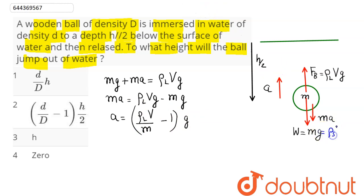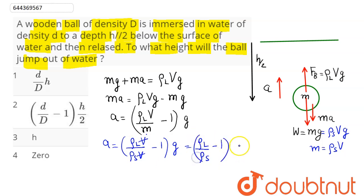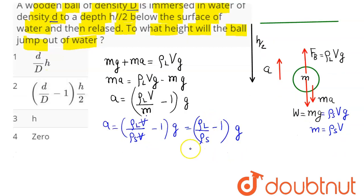Since M equals density of solid × V, i.e., M = ρ_S × V, substituting the value of M: a = (ρ_L × V) / (ρ_S × V) − 1, all times g. V and V cancel out, so acceleration comes out as: a = (ρ_L / ρ_S − 1) × g.